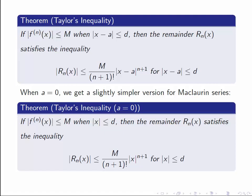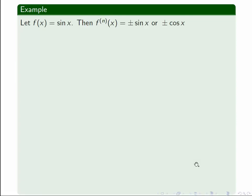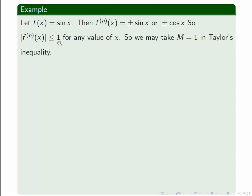Let's see how to apply this when f of x equals sine x. We need to bound all the higher derivatives of this function. The first derivative is cosine, the second is minus sine, the third is minus cosine, the fourth is sine, and then it just rotates through those values. So all of the higher derivatives of sine are either plus or minus sine or plus or minus cosine. That gives us a very obvious bound: they all have absolute value less than or equal to 1 for any value of x. So we can take capital M equal to 1 in Taylor's inequality.